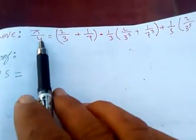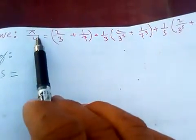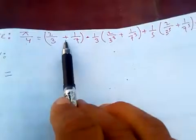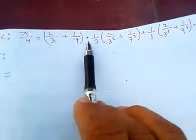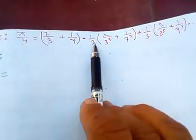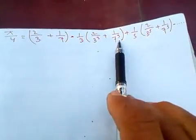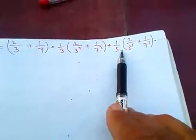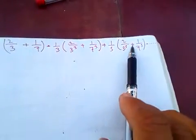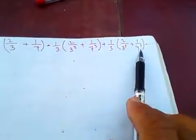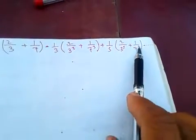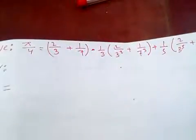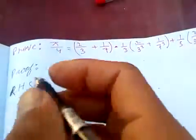Friends, thank you. I'm going to prove that π/4 is equal to 2/3 + 1/7 minus (1/3)·(2/3) keep plus (1/7) keep plus (1/5)·(2/3) to the power five plus (1/7) to the power five minus, and so on up to infinity.